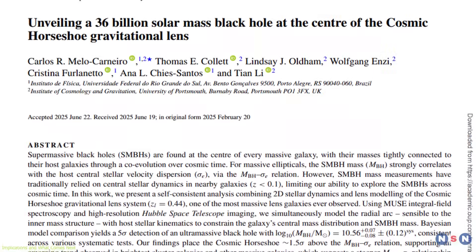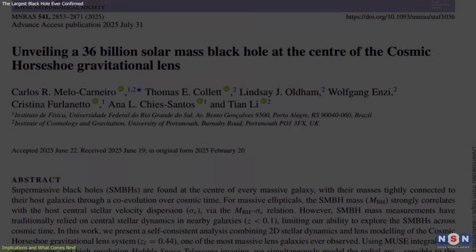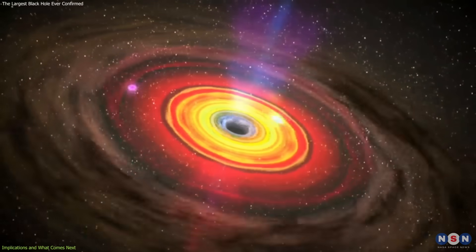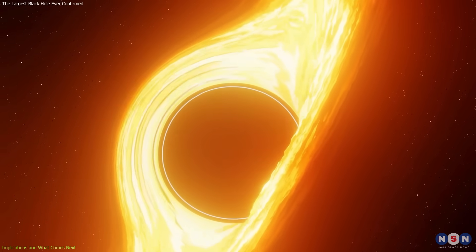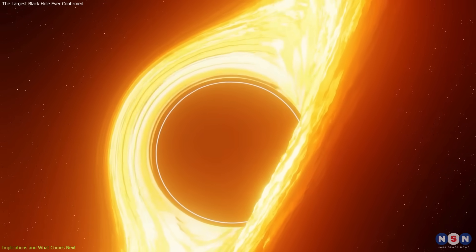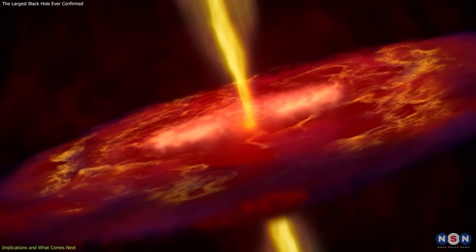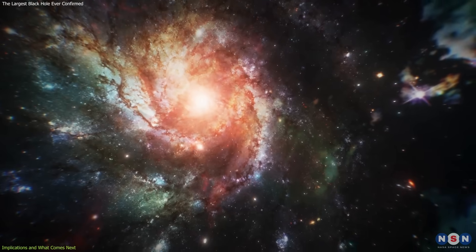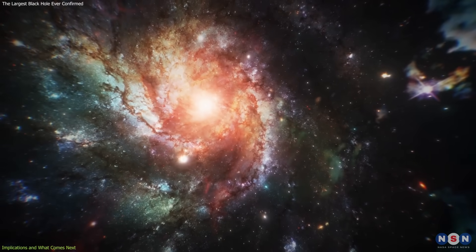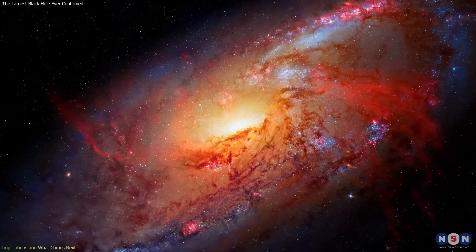The existence of this large carries several implications for astronomy. First, it challenges our assumptions about IT galaxy coevolution. If ultramassive black holes can outgrow the expectations set by stellar velocity dispersion, then feedback processes like jets and winds may operate differently at these scales. This could help explain why the most massive galaxies in the universe are often quiescent, with little or no star formation left.